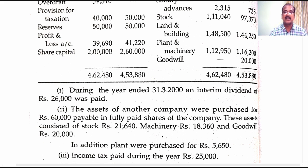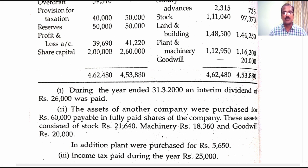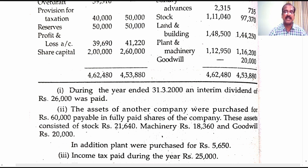The second additional information says the assets of another company were purchased for 60,000 rupees, payable in fully paid shares of the company. So assets are purchased and in turn this company has issued shares valued 60,000 rupees. These assets consisted of stock 21,000, machinery 18,360, and goodwill 20,000 rupees. Regarding the purchase of machinery and goodwill by way of issuing shares, we don't have any problem because they don't contribute for fund inflow. Whereas when a concern has bought stock valued 21,000 by way of issuing shares, you find it contributes for fund inflow. So if any current asset is purchased by way of issuing shares by a company, that value alone has to be taken over to the sources side of the funds flow statement because it is a current asset.